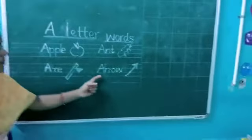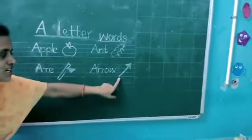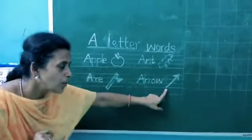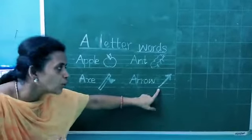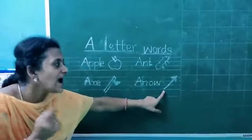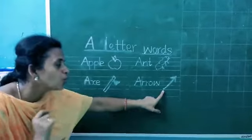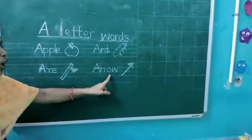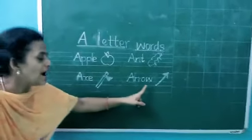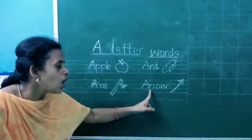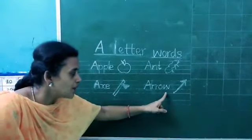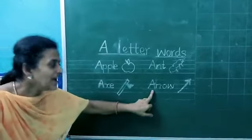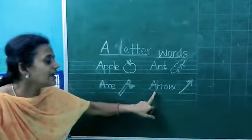Next, see this picture. Come on, what is this picture? Think, think, think — everybody think and tell me. What is this picture? Arrow. All of you say arrow. What is the spelling of arrow? A, R, R, O, W. Arrow. Say once again: A, R, R, O, W. Arrow. Arrow starts with letter A.